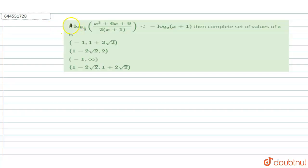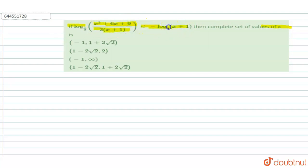Hello, welcome to Doubtnut. In this question, we have to find the complete set of values of x which satisfy the condition: log base 1/2 of (x² + 6x + 9) / (2(x + 1)) is less than minus of log base 2 of (x + 1).